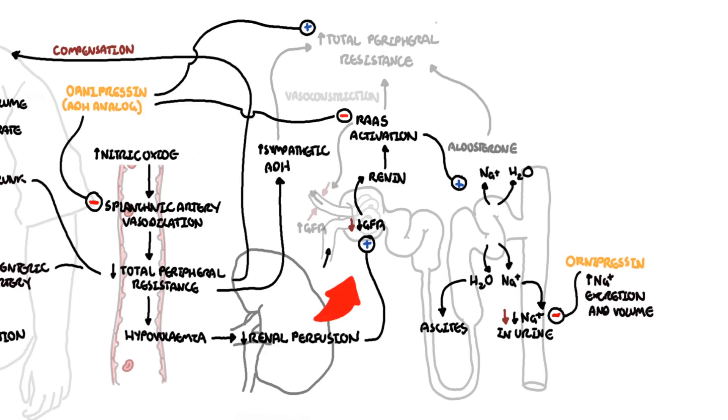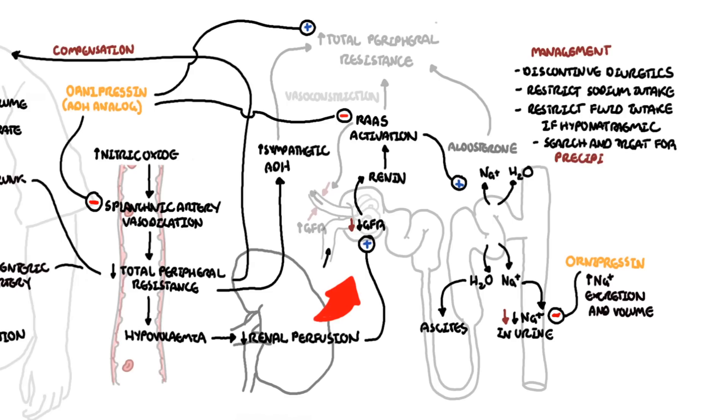Patients with hepatorenal syndrome have an overall poor prognosis without liver transplantation. Generally, management includes discontinuing diuretics, restricting sodium intake, restricting water intake in hyponatremic patients, and searching for the precipitating factor. Therapeutic interventions include treatment with vasoconstrictors as well as albumin. You can also place transjugular intrahepatic portosystemic shunt in selected patients.